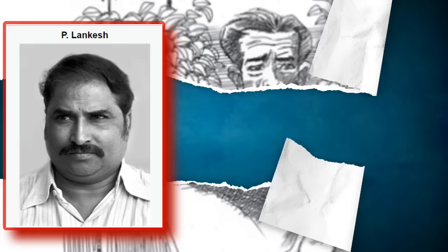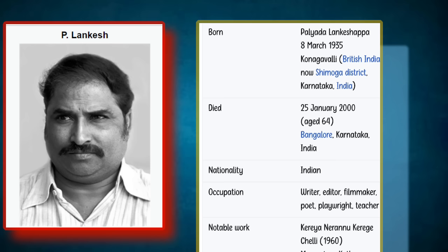P. Lankesh was born in the year 1935 and died in 2000. He is an Indian writer and journalist who wrote in Kannada. After graduating with an honors degree in English from Central College of Bangalore, he completed his Master of Arts in English from Maharaja College of Mysore. You can include this as an introduction in the final examination.